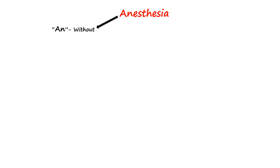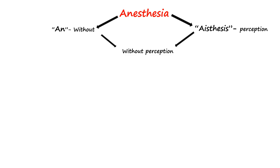The word anesthesia is derived from two Greek words: 'an', which means 'without', and 'esthesis', which means 'perception'. So it basically means without perception.